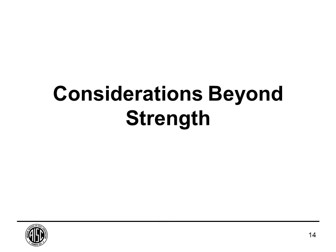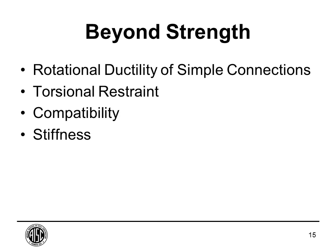Turning to connection design—primarily shear connections—we look at considerations beyond strength. We have to ensure the connection is strong enough to take the design loads, but beyond that there are other considerations: rotational ductility for simple connections, torsional restraint at the end of beams, compatibility, stiffness, and others. Today we'll concentrate on rotational ductility and torsional restraint.